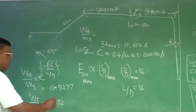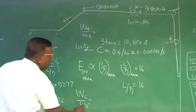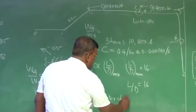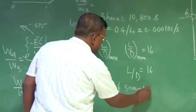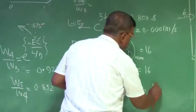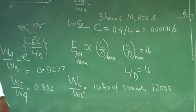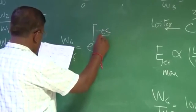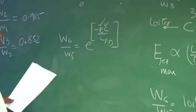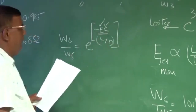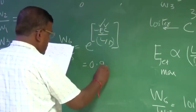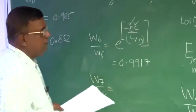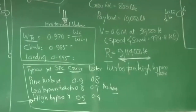Next we want W6/W5, which corresponds to a loiter of 30 minutes as per the mission requirement. Thirty minutes equals 1,200 seconds. Using the endurance equation W6/W5 = e to the power of minus E×C divided by L/D, with E = 1,200 seconds, C = 0.000111 per second, and L/D = L/D_max = 16, this ratio comes out to be 0.9917. Then W7/W6, based on historical data for landing, is taken as 0.995.